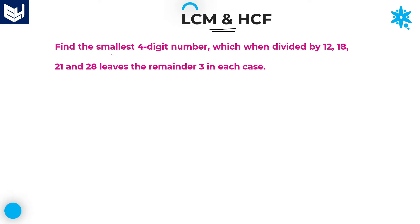See the first question in this session. Find the smallest four-digit number which when divided by 12, 18, 21, and 28, leaves the remainder 3 in each case. The word 'smallest' indicates this is an LCM problem, and since it is based on the number of digits, it is a third-model LCM problem.